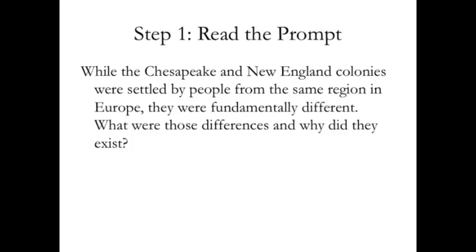We're going to go through a series of steps. Step 1 sounds really simple but you'd be amazed at how many people just don't do it. Step 1 is to read the prompt. The prompt for this paper is: while the Chesapeake and New England colonies were settled by people from the same region in Europe, they were fundamentally different. What were those differences and why did they exist?